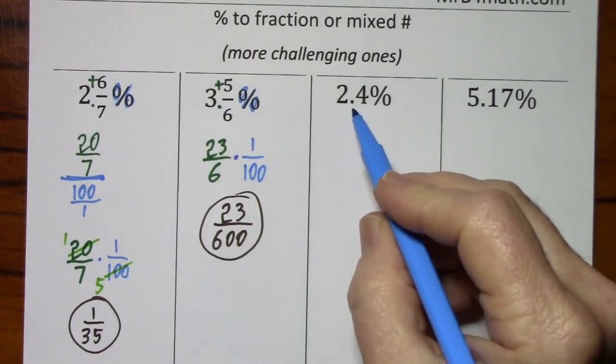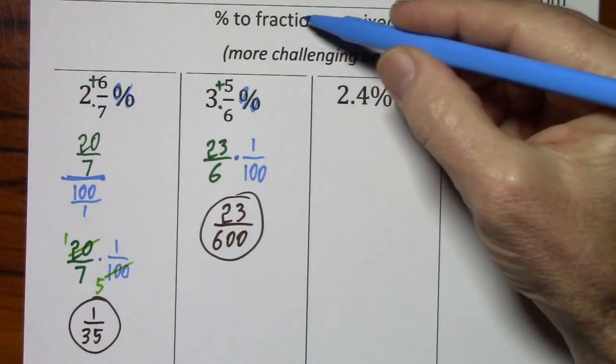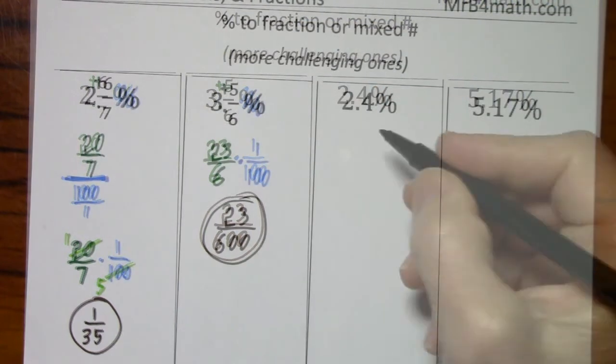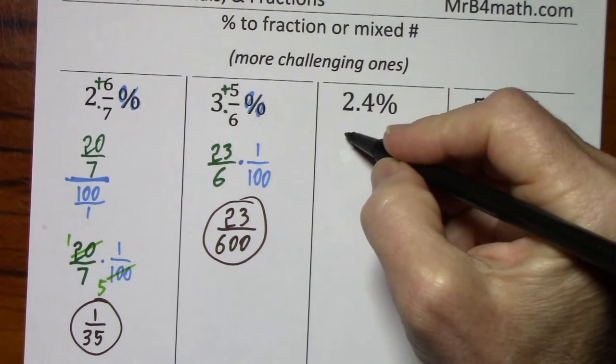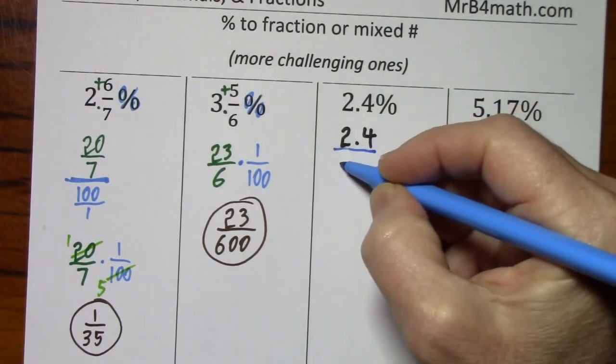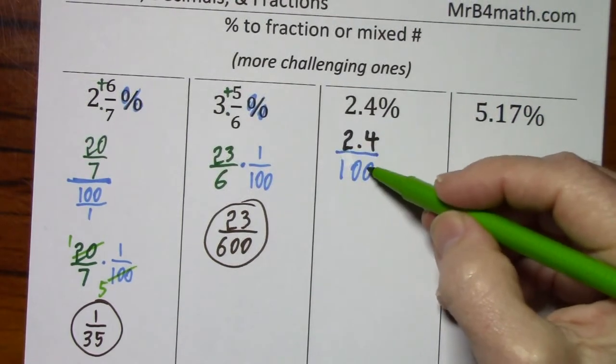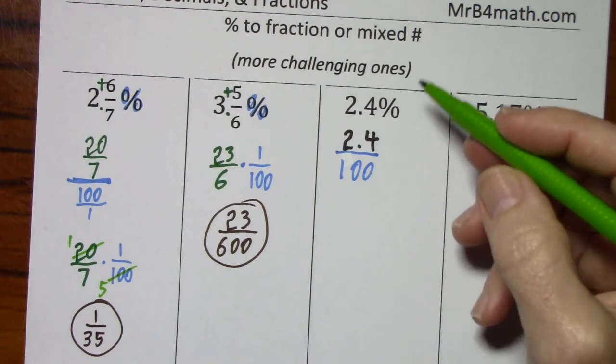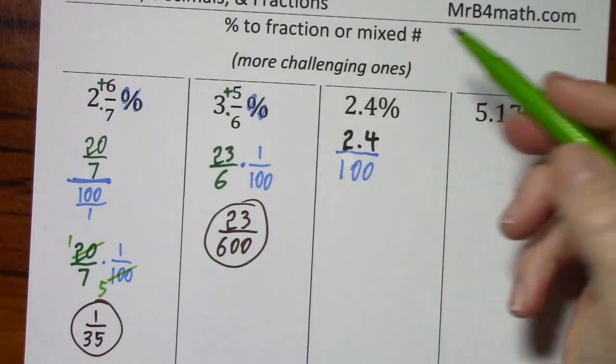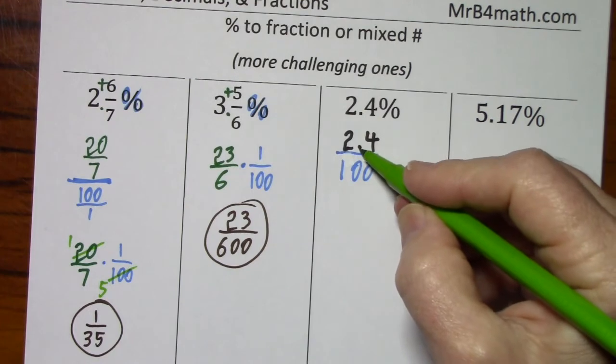Okay, we have a decimal and a percentage. They want us to write it as a fraction or a mixed number. So 2.4% is 2.4 over 100. But in this case, I'm not just going to divide by 100. I'm supposed to write this as a fraction or a mixed number.